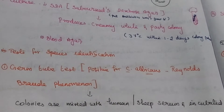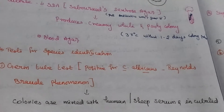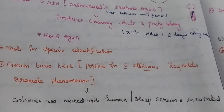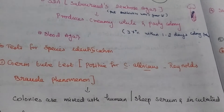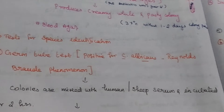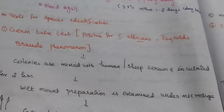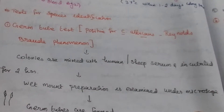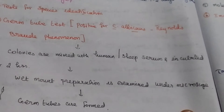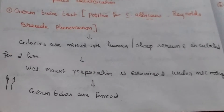Tests for species identification begin with the germ tube method, which is positive for Candida albicans. This is also called the Reynolds-Brout phenomenon. Colonies are mixed with human or sheep serum and incubated for 2 hours, then a wet mount preparation is examined and germ tubes are observed.